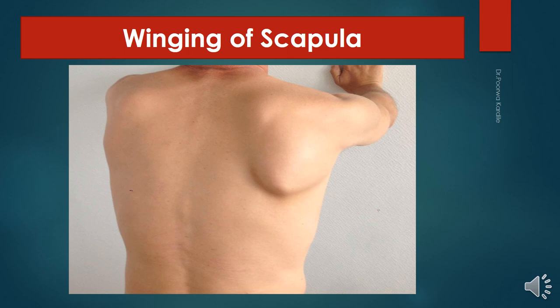Normally the pull of the serratus anterior muscle keeps the medial border of scapula in approximation with the thoracic wall. The disability seen is loss of pushing, punching movement, and overhead abduction. When a person attempts to push, punch, or perform overhead abduction, the inferior angle and medial border of the scapula become prominent — this is known as winging of the scapula.